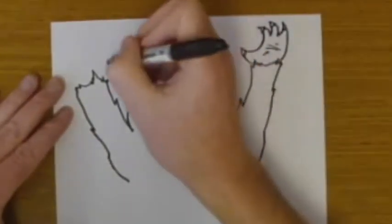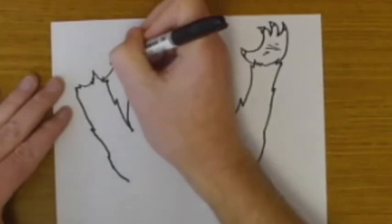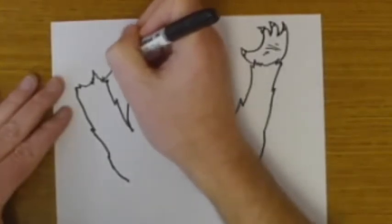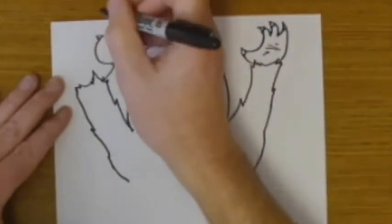Same thing on the other side, you just repeat what you've done, but you kind of make a mirror image of the one on the right, on the left here. Little triangle shapes for the claws.